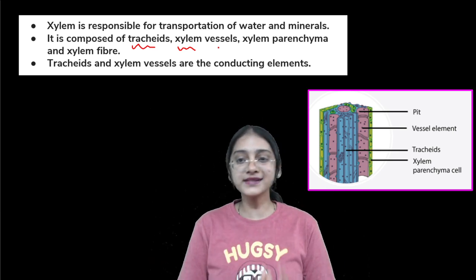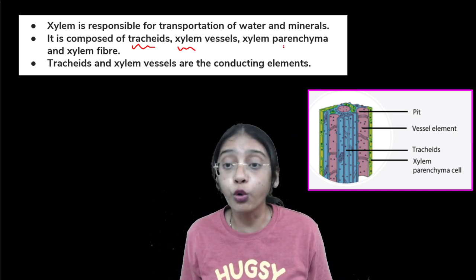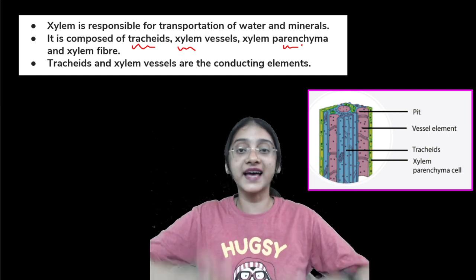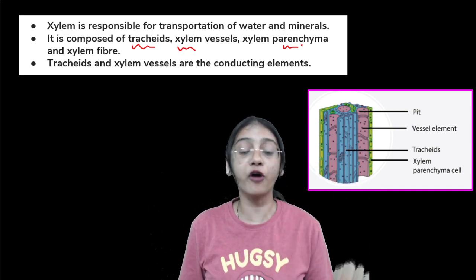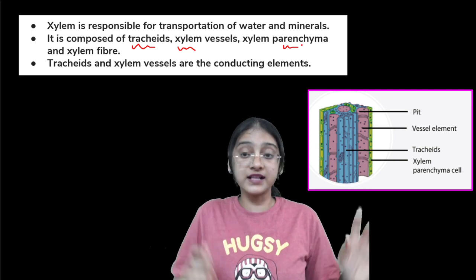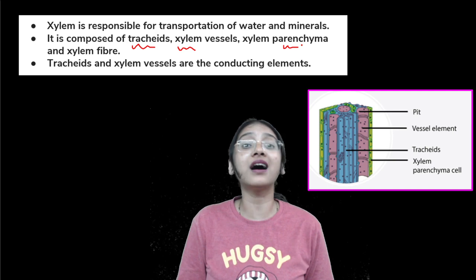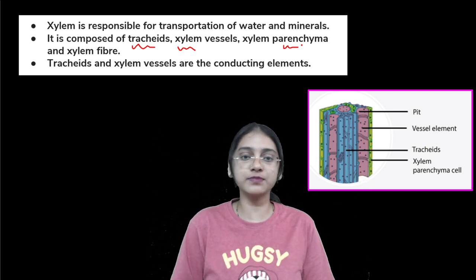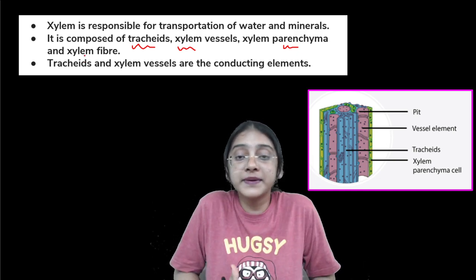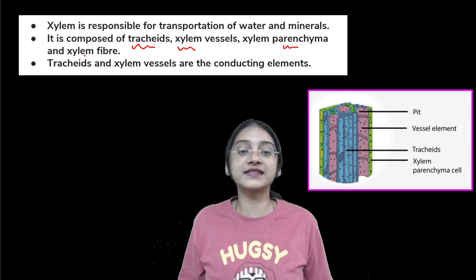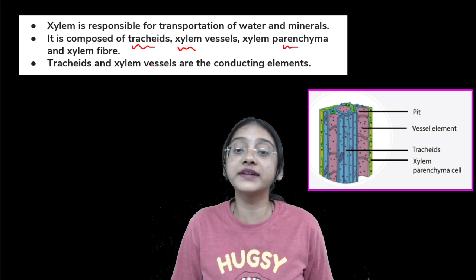Xylem parenchyma is the only living cell among the four cells that make up xylem, which is a complex permanent tissue. The rest are all dead cells. Xylem fiber is a dead cell whose importance is providing strength to the other cells of the xylem. Tracheids and xylem vessels are together involved in conducting elements — meaning minerals, ions, and water.